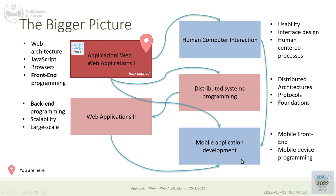Another optional course strongly related to this path is Mobile Application Development by Professor Malnati, who also teaches Web Applications 2. It's the only course in the master degree that talks about native mobile development — Android, iOS, and so on. In Web Applications 1 and HCI we also work toward mobile applications, but they would mostly be web applications navigated with a mobile phone. For truly native applications, that's the course to take.